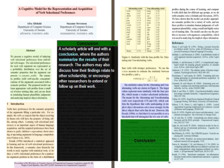The second last section of a research article is the conclusion. A scholarly article will end with a conclusion where the authors summarize the results of their research. The authors may also discuss how their findings relate to other scholarship, or encourage other researchers to extend or follow up on their work.